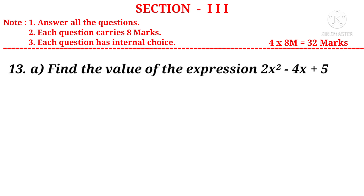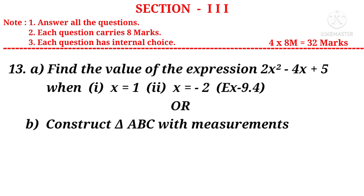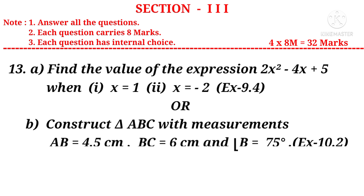Question 13A: Find the value of the expression 2X² minus 4X plus 5 when 1) X is equal to 1 and 2) X is equal to minus 2. It is a question from the 9th chapter, Algebraic Expressions. Or 13B: Construct triangle ABC with measurements AB equal to 4.5 centimeters, BC equal to 6 centimeters, and angle B equal to 75 degrees — from the chapter Construction of Triangles.